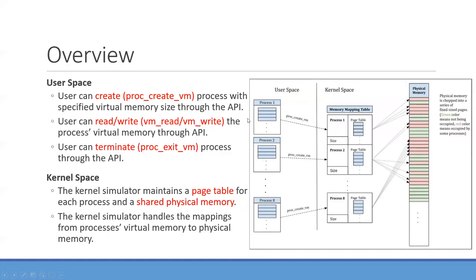First we have the overview for the user space and kernel space in this assignment. In the user space, we have several processes. The user should use the create function to create a process with the specified virtual memory size through the create API — proc_create_vm. Then the user can read or write the process virtual memory through the read-write API: vm_read and vm_write.